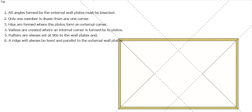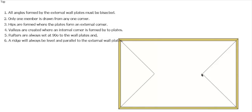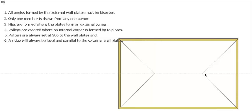Let's draw the hips in — I'll darken the hips and get rid of my development lines. I now have a hip coming up from each corner, one member from each corner, till they meet in the center. We don't need to worry about rafters, and we don't have any valleys in this particular one. Our ridge is always level and also parallel to our external walls, so if we come off our external walls, parallel to where these two points meet in the middle, that will be the position of our ridge. So with this very simple hip roof, I've got the position of my four hips and the position of my ridge.